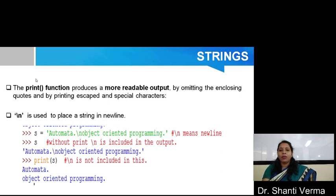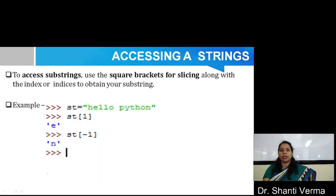You can see here, if I define a string S having one special symbol that is \n, and if I only write S, that S is included in the output. But if I write print(S), then \n is executed for a new line. You can also access a substring from the string by using slicing with indices. For example, if STR equals to 'hello Python' and you want to access the value at the first position, you write STR[1], it gives 'e'. If you write STR[-1], minus one is used for the last element, so it gives 'n'.